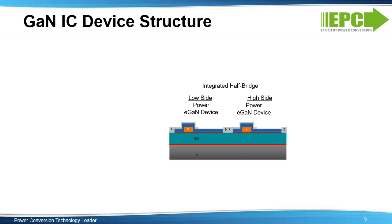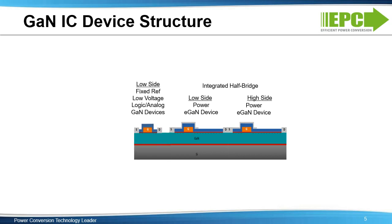EPC introduced its first integrated half bridges in 2014. The voltage of a GaN device is determined by the distance between the gate and the drain terminals. By shrinking that distance, you can create lower voltage devices on the same substrate as a higher voltage device. If you create very small devices with very tight spacing between gate and drain, you can have logic or analog level devices on the same substrate as your high voltage power devices.